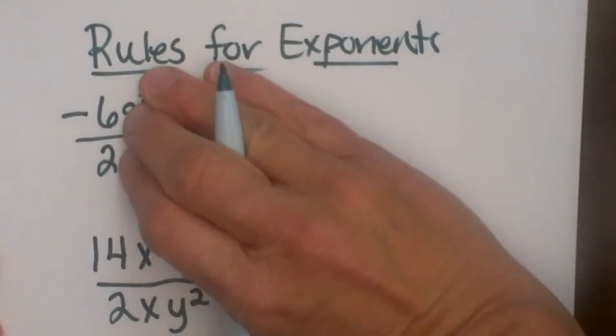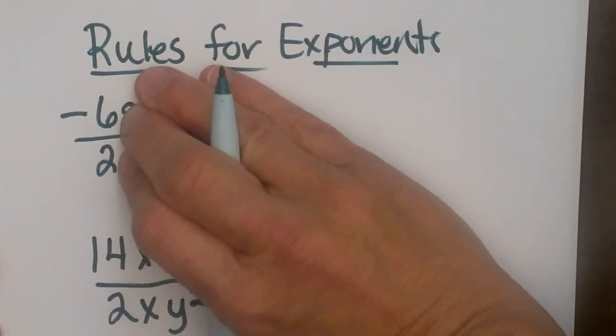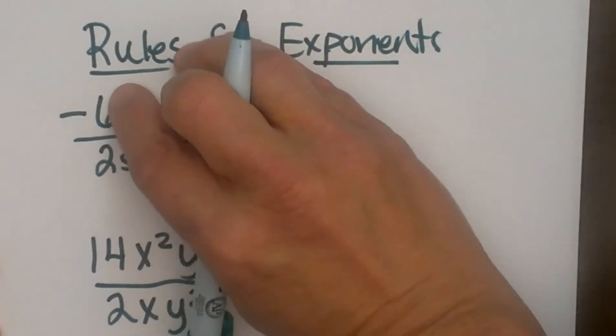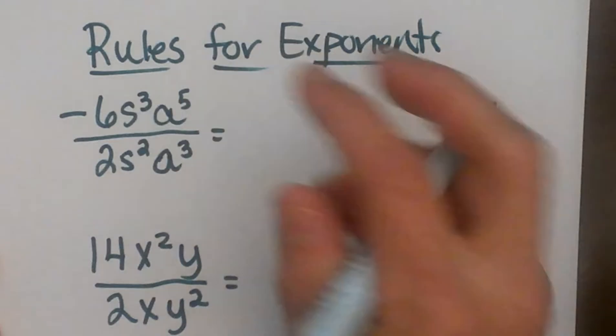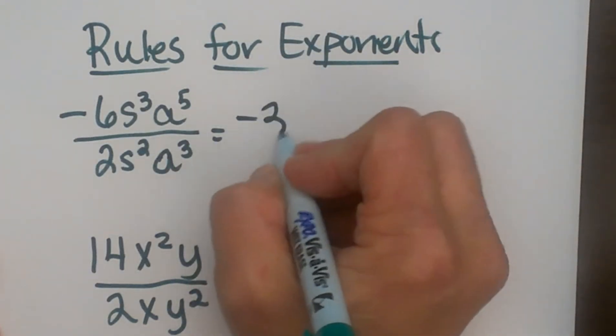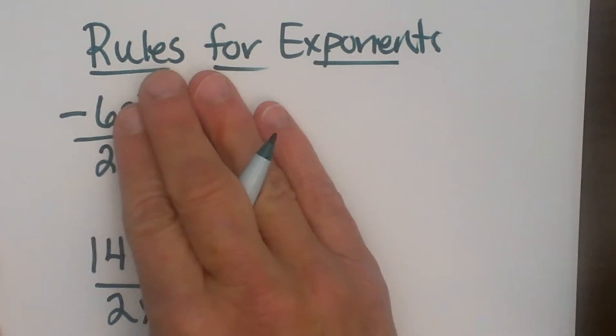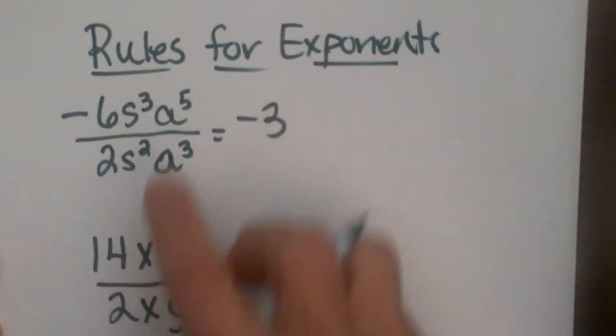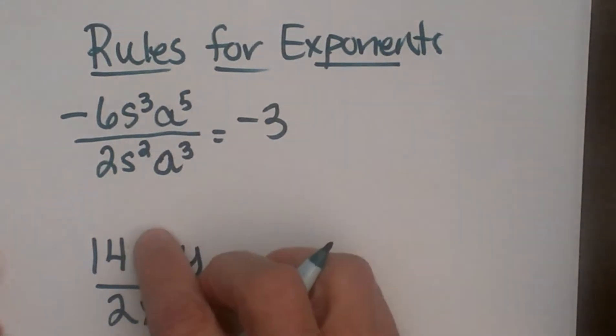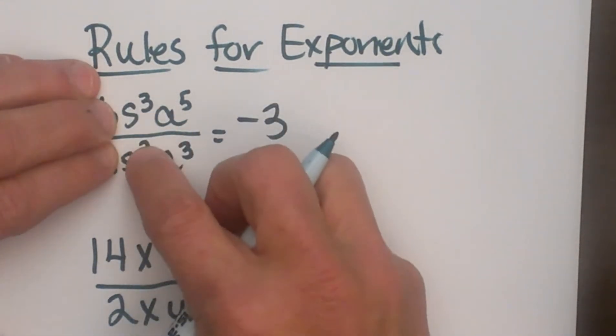We have learned so far that what you want to do is look at the coefficients and just divide those. So negative 6 divided by 2 is just going to give me negative 3. That negative is just a division problem with integers. A negative divided by a positive is a negative. And then we are going to go to the exponents. Now let's take one variable at a time.